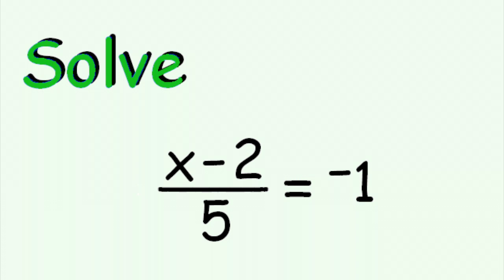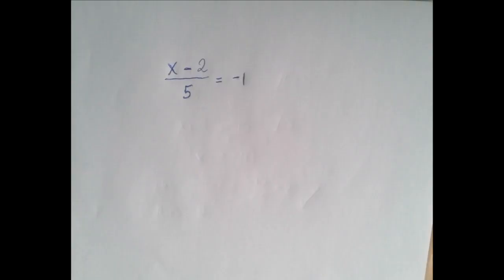So this is a two-step equation. What happened to the unknown is first we subtracted 2 and then there was a division by 5. We're going to isolate x by undoing these two operations in a reverse order. So first we're going to multiply by 5 and then we're going to add 2.